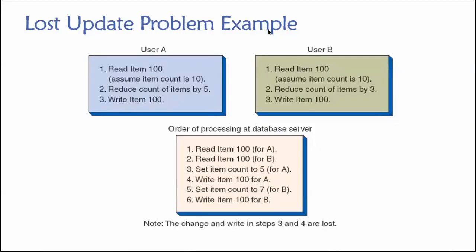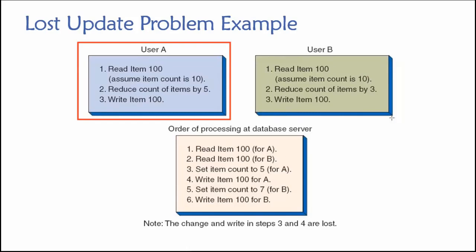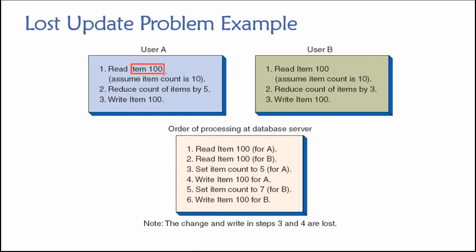Let's see an example. We have user A and user B again, working in an inventory scenario. But in this scenario, unlike the previous one, both user A and user B are interested in item number 100 — they're working with the same item at the same time. We're going to assume at the beginning, at time zero, that the number of units in inventory for item 100 is 10.